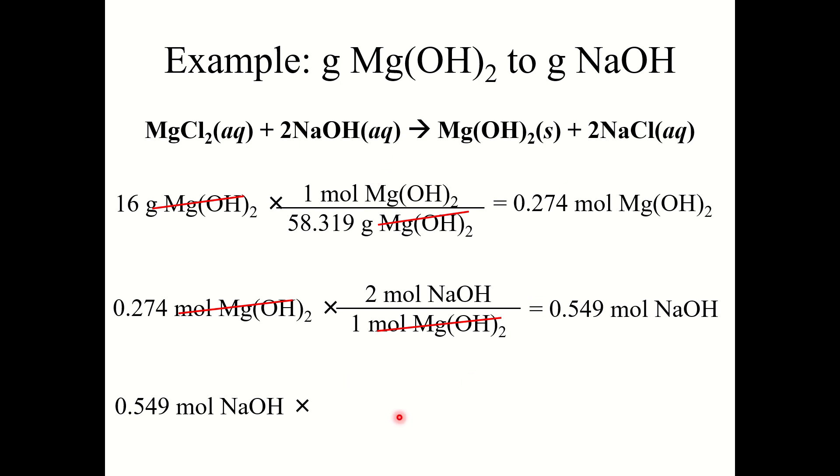So 0.549 times 39.997 grams NaOH over 1 mole NaOH. And this gives my final answer of 22. I'm going to round to 2 sig figs since my initial value had 2. So 22 grams of sodium hydroxide are required to produce 16 grams of magnesium hydroxide.